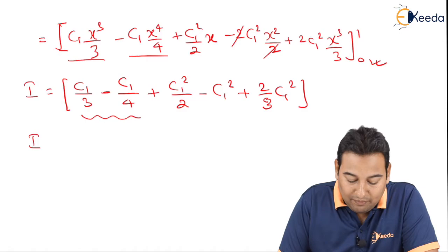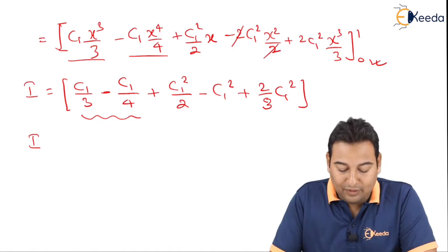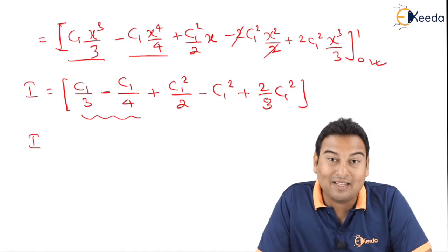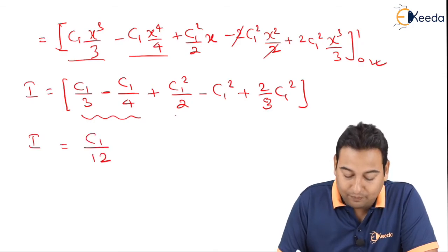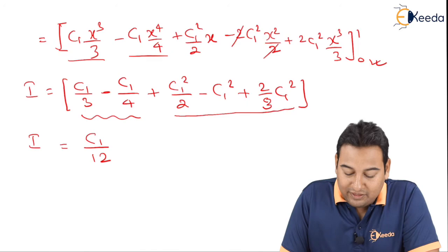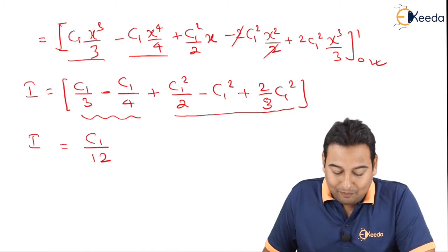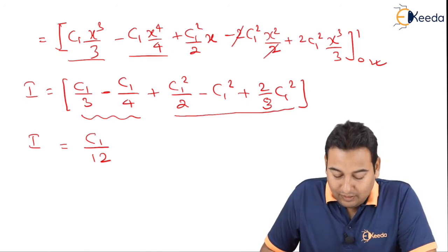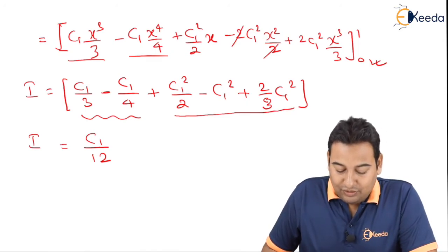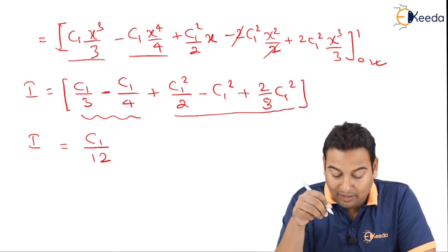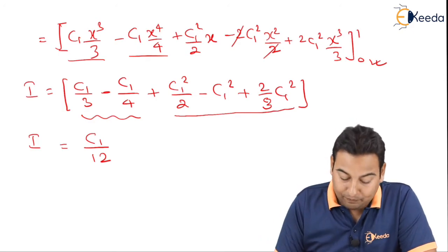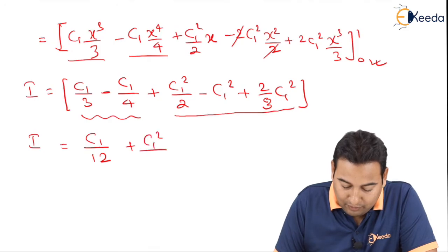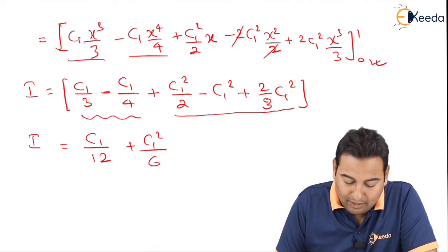Simplifying: the c1 terms give c1/3 − c1/4 = c1/12. The c1² terms give c1²(1/2 − 1 + 2/3) = c1²/6. So I = c1/12 + c1²/6.